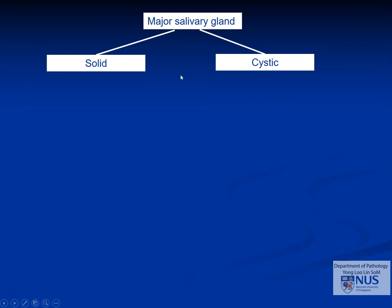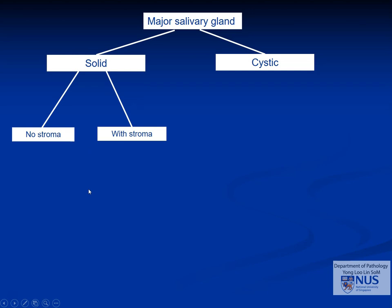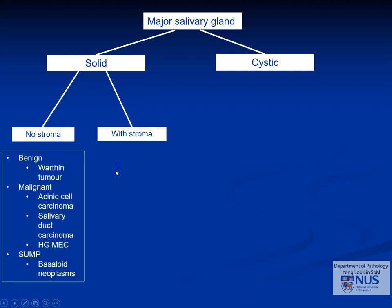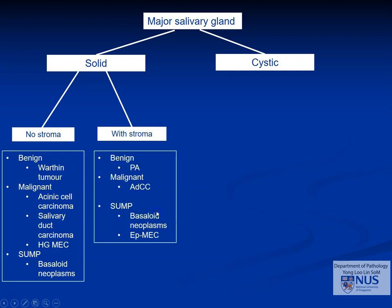A useful scheme, especially with knowledge of radiologic appearance, is to divide solid lesions into those without obvious stroma versus those with obvious stroma or matrix. Without stroma: Warthin tumor (benign), and malignancies such as acinic cell carcinoma, salivary duct carcinoma, high-grade mucoepidermoid carcinoma, and basaloid neoplasms falling into the SUMP category. With stroma: pleomorphic adenoma (benign) and adenoid cystic carcinoma (malignant). Basaloid neoplasms can sometimes have a small amount of stroma, and epithelial-myoepithelial carcinoma is often difficult to definitively diagnose on cytology and may fall into SUMP.